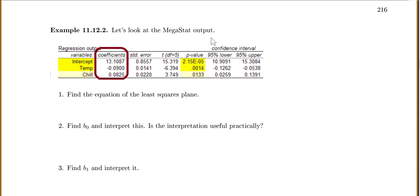So let's look at our MegaStat output. We want to find the equation of our least squares line. Notice I've circled the coefficients for us. So our equation is going to be our intercept of 13.1087 plus, or in our case, minus, because this next one's going to be minus, minus 0.09 times the temperature. Plus 0.0825 times the chill.